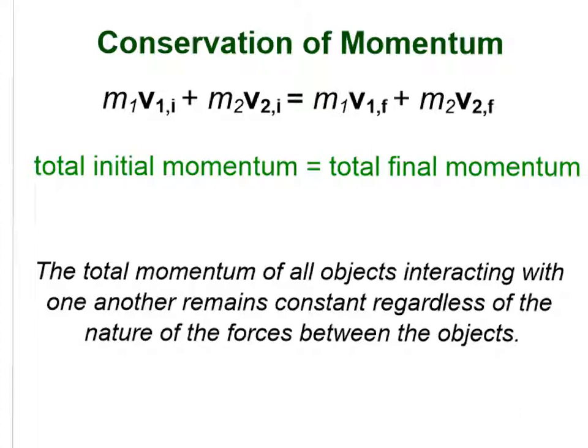Now, this is true only in a closed system. When the system contains other objects, other forces, or other things are going on, it is no longer a closed system, and we cannot consider this to be true. Also, you may wonder: what about friction? That's a really good question. The cumulative effects of frictional forces during collisions are very small as long as the time period we're considering is very, very short. So we consider momentum to be conserved as long as the time interval is very short. If longer periods of time are considered, then frictional forces do end up becoming significant.